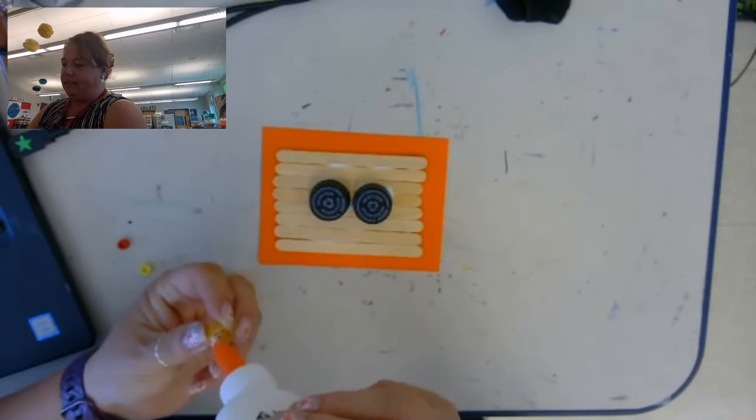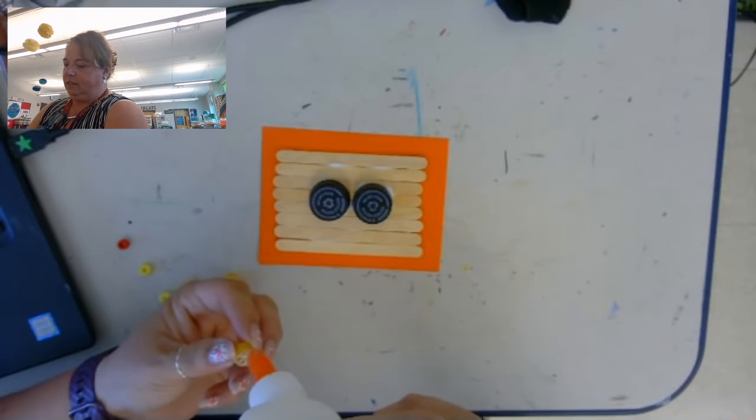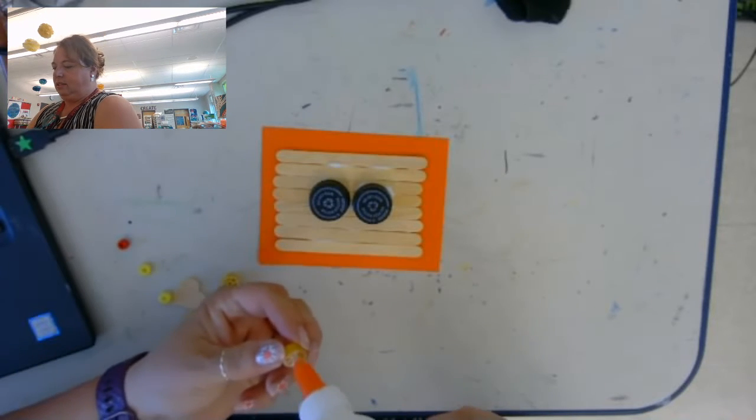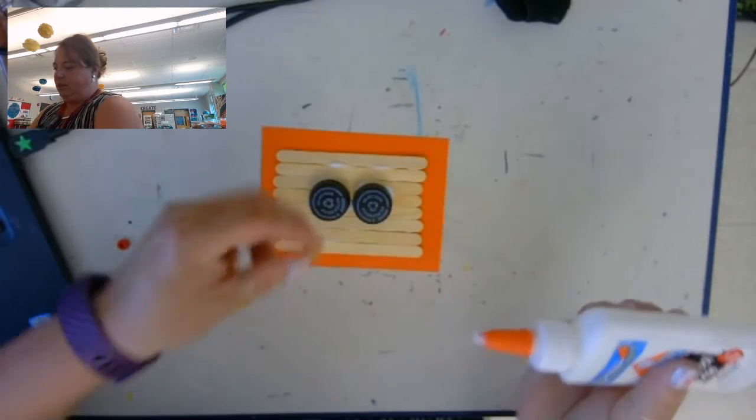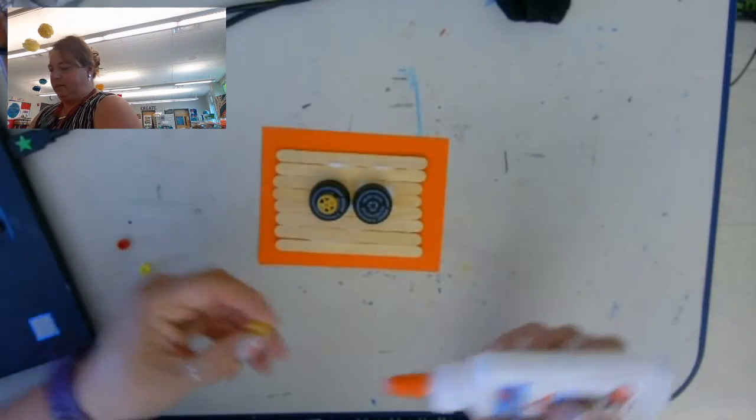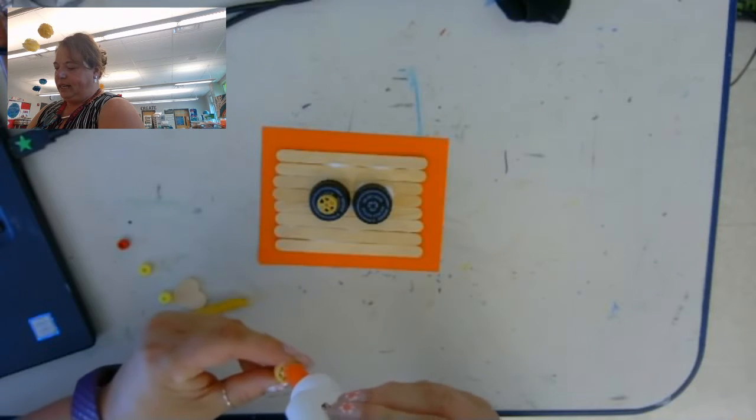You can find these at Giant. So I'm going to glue those on to the tops of the bottle caps, so it's going to look kind of like eyes.